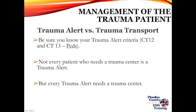For trauma alert versus trauma transport, know the trauma alert criteria. Not every patient who needs a trauma center is a trauma alert, but every trauma alert needs a trauma center. Trauma alerts that become trauma arrests need to be diverted to the closest hospital, except if they have an unmanageable airway — in that case, take them anywhere to get an airway established. Also, give a report to the receiving facility as early as possible, especially for trauma alerts — does the patient need blood, a vent, or other emergent care on arrival?